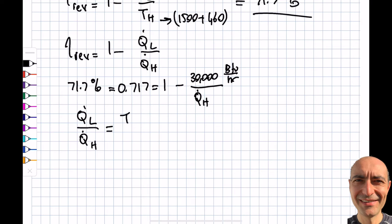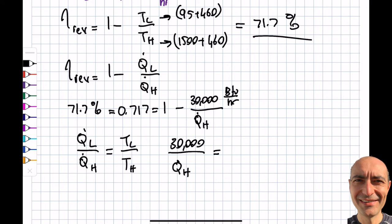If I write it this way, 0.283 = 30,000 / Q_dot_H. Converting temperatures: TL = 95 + 460 = 555, TH = 1500 + 460 = 1960. Either method gives the same answer—Q_dot_H = 105,946 BTU per hour.